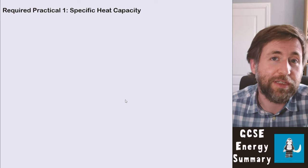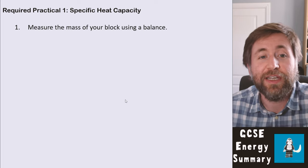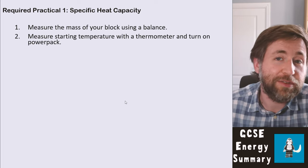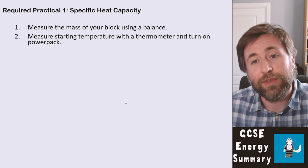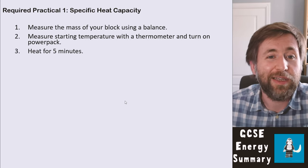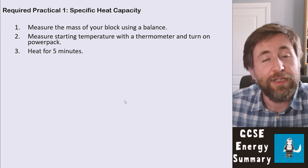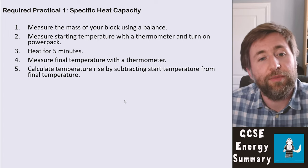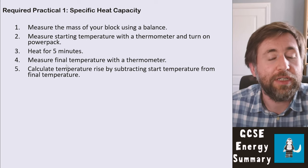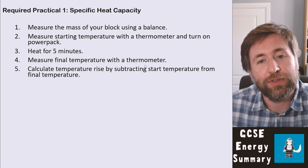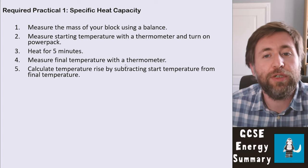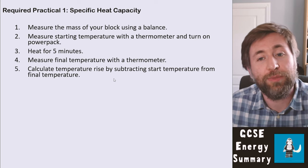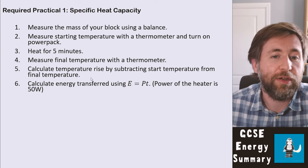There is a required practical to measure specific heat capacity. Memorize your methods. First, measure the mass of the block using a balance. Then measure the starting temperature with a thermometer, turn on a power pack, and heat for a set time — say five minutes. Measure the final temperature with a thermometer. Calculate the temperature rise by subtracting the start temperature from the final temperature.